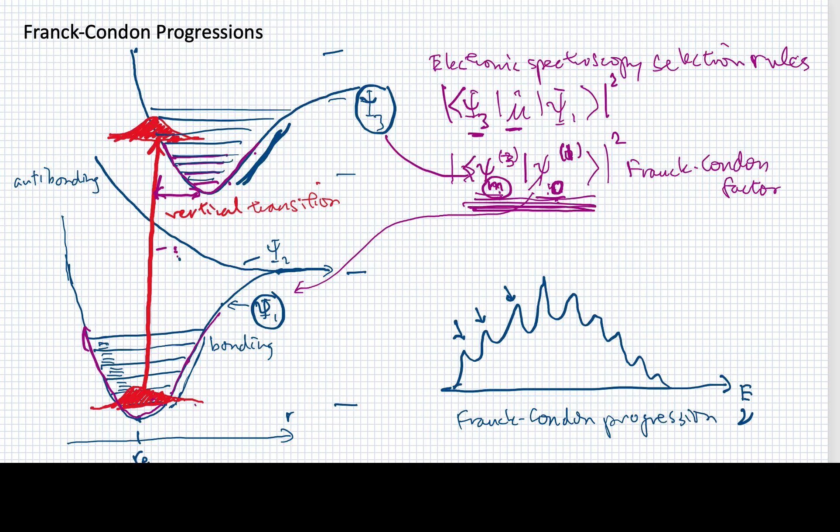And that progression is something that we can actually model by finding these overlap integrals between our initial state, psi zero down here, and the various psi m states that are up here. It turns out that the highest peak here is basically going to correspond to the state whose turning point is right where this is vertically, directly above the bottom of this well. I'm speaking rather loosely and approximately, but in general, we will find that the highest peak corresponds to the state in the upper electronic surface that is roughly directly above that. So in other words, this is giving us a direct measure of how displaced these two surfaces are.